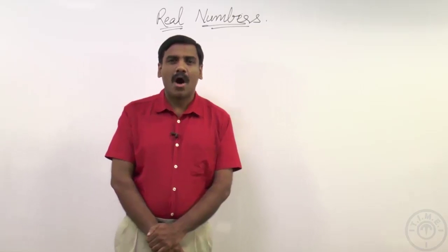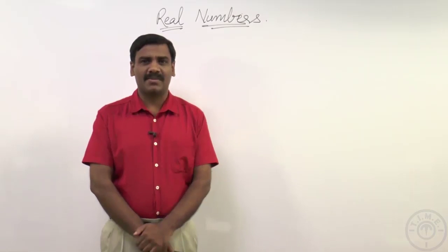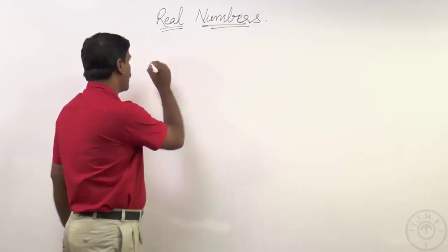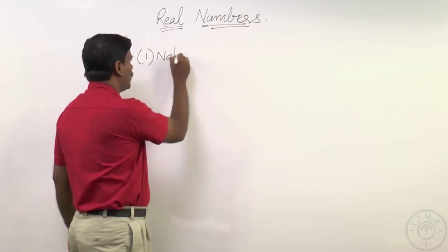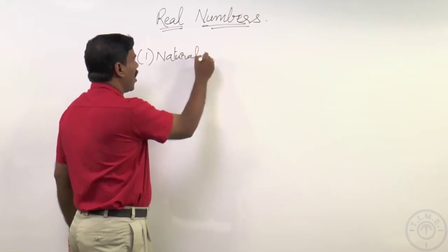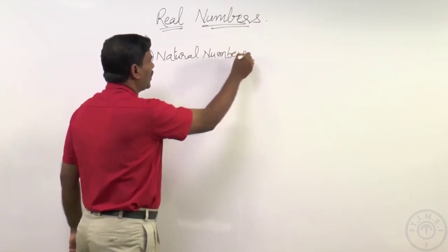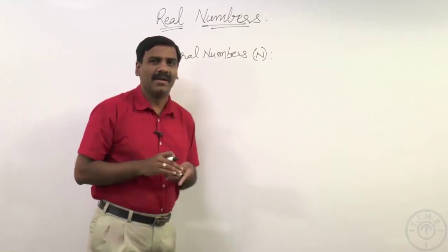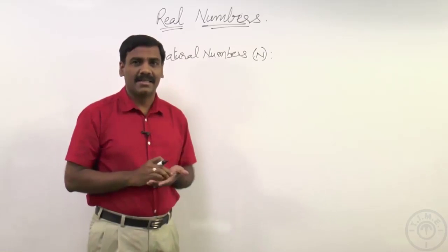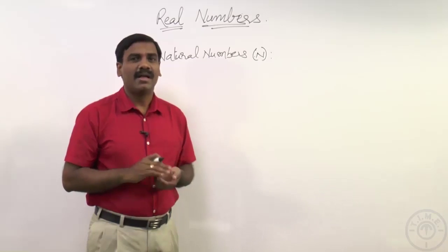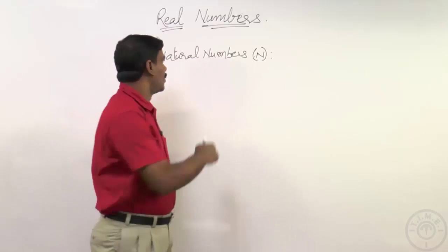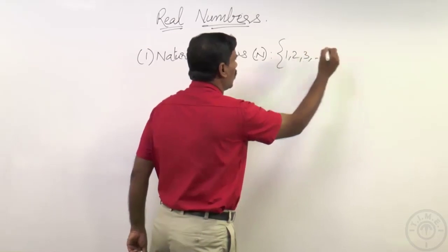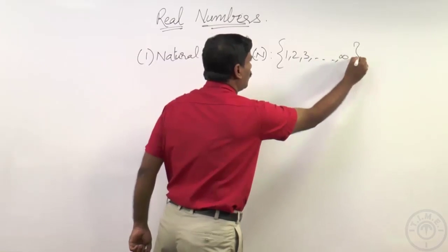What are natural numbers? All counting numbers are called natural numbers, as we know from our earlier classes. If you are looking at all countable numbers — how many rooms are there in your house, how many boys or girls are there in a class — these are all natural numbers. Natural numbers start from one, two, three, and so on; they are all countable things and extend up to infinity.